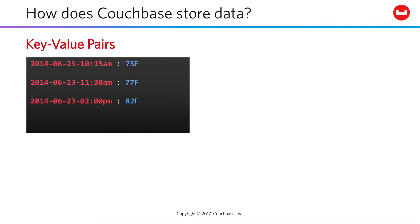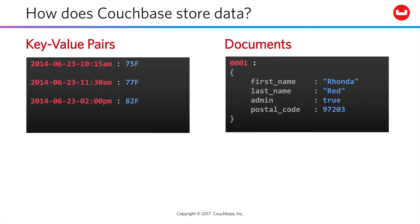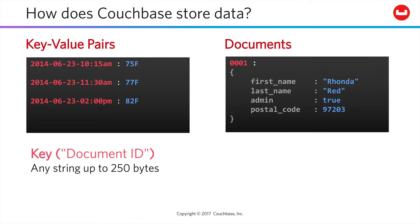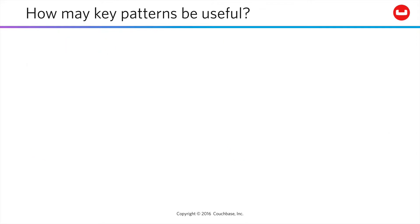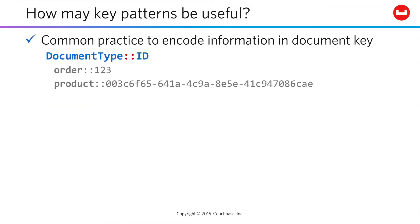So how does Couchbase store your data? At root, it's key-value pairs. The key can be shaped however is necessary. The value can be as simple as a couple of characters. More commonly, however, people work with documents — you have a key referring to a JSON document of whatever structure is appropriate for the data structures in use within your own software. The key, often also called the document ID, can be any string up to 250 bytes. The value can be any binary value up to 20 megabytes.